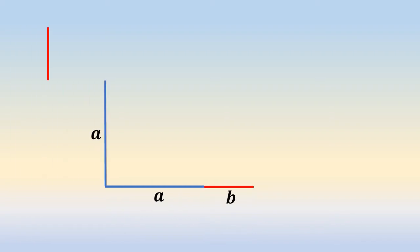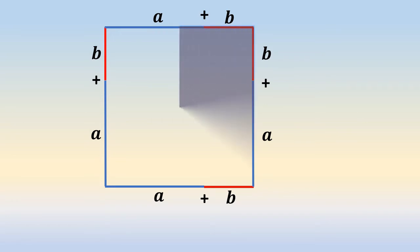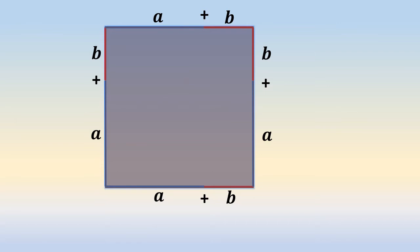Since we need a square, that is a plus b whole square, we build up a square whose all sides are a plus b. So the area of this square whose sides are a plus b is equal to a plus b whole square.